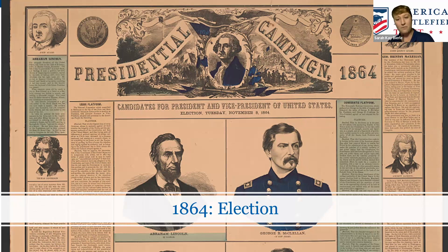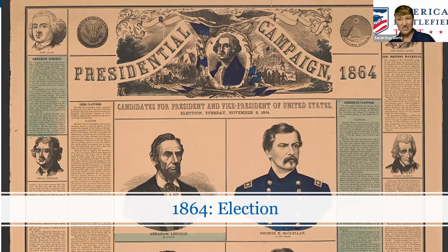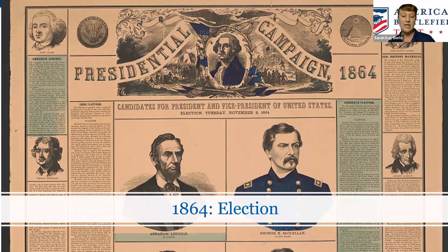The Democrat Party platform doesn't align with their candidate's beliefs. Their candidate for president is George McClellan, a very popular Union general in 1861 and 1862, out of army command by 1863-1864 but still popular with troops. McClellan thinks finishing the Civil War with a Union victory is good, but his running mate George Pendleton and the Democratic platform put forward an idea of peace, which could take different forms depending on which splinter of the party you spoke to.